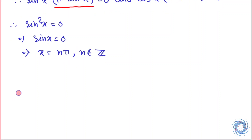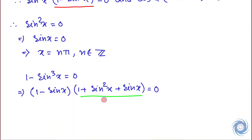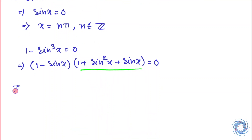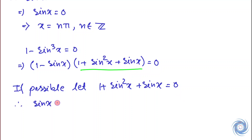Now we will show that the quantity 1 + sin²x + sin x cannot be zero. If possible, let this equal zero. Then since sin x cannot equal zero — because if sin x equals zero, then sin²x equals zero and then the left-hand side would equal zero — so we have sin x not equal to zero.